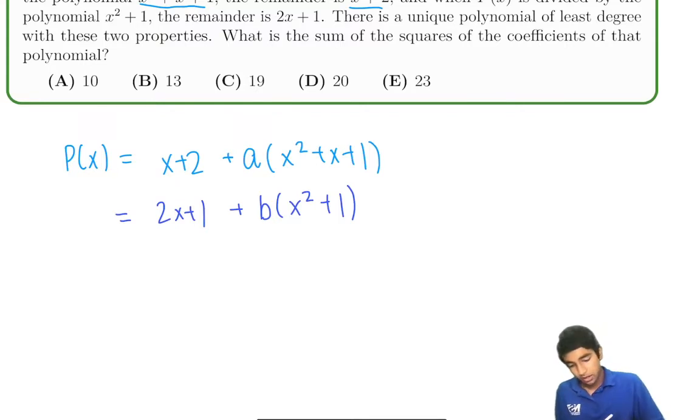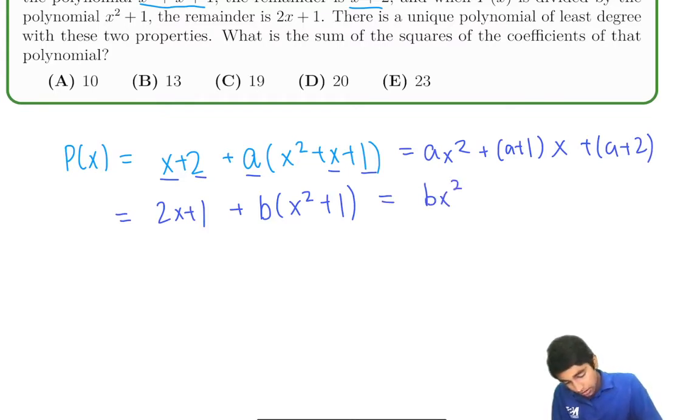Okay. Let's see. Let's expand both sides. This first side is ax squared plus ax plus an additional x, so plus a plus 1x, and then plus a plus 2. This over here is bx squared plus a plus 2x plus b plus 1, right? And these are equal, those two expressions.